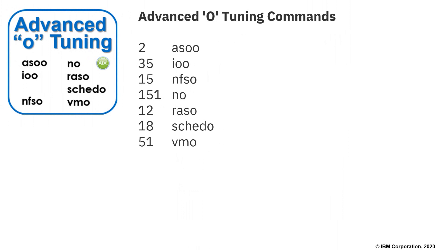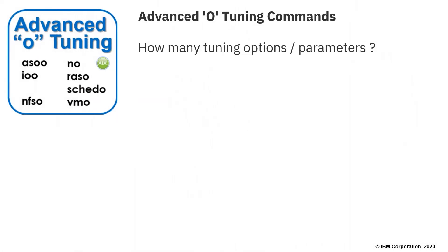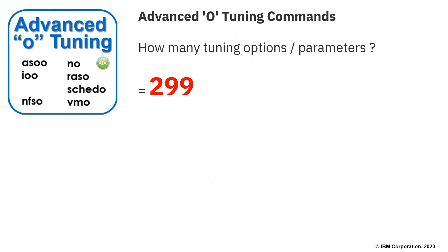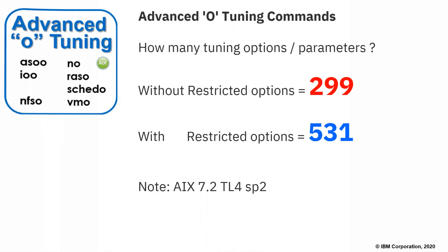I did a quick check and ran the commands to find out how many options are in each. The big one is NO, the network options, then VMO, the virtual memory manager options, and then IOO for the storage IO operations. Adding them all up, the answer is 299 — that's quite a lot. But there's a whole bunch of options not normally shown to you; you have to put extra parameters in the commands to actually see them. These are known as the restricted settings.